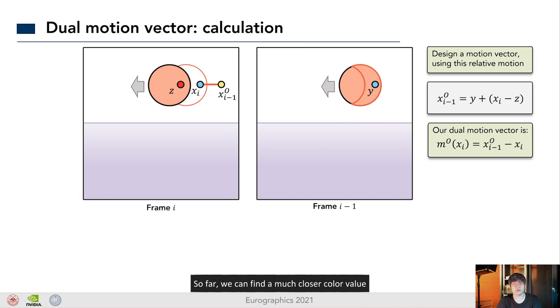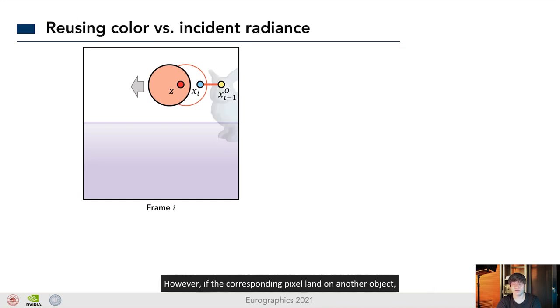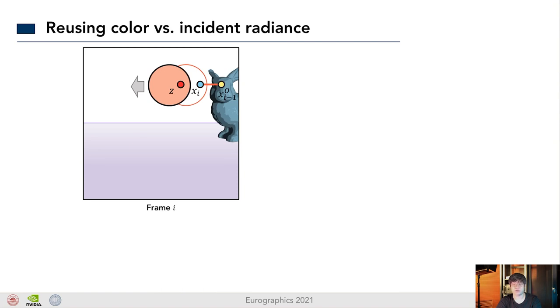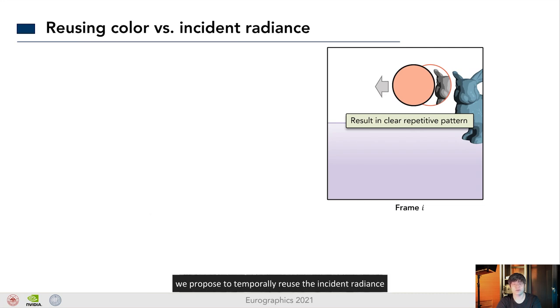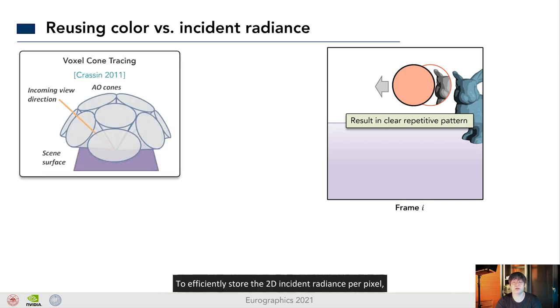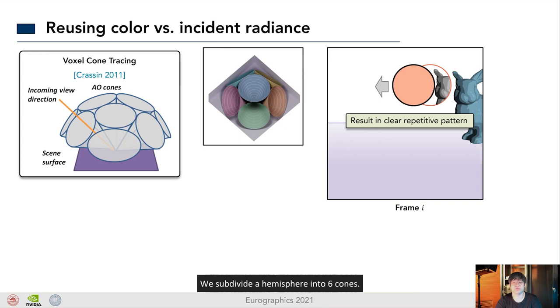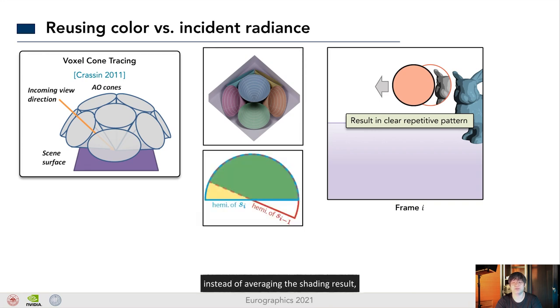So far, we can find a much closer color value to x sub i on the background. However, if the corresponding pixels land on another object, simply applying the color values will result in clearly repetitive patterns, because it is essentially copying pasting image contents. To address this issue, we propose to temporarily reuse the incident radiance instead of the shading results. Specifically, for the application of diffuse indirect illumination, we record the 2D incident radiance per pixel. To efficiently store the 2D incident radiance per pixel, we refer to the representation in voxel cone tracing approach. We subdivide a hemisphere into 6 cones, and during the spatial temporal filtering, instead of averaging the shading result, we filter for each cone individually, using the overlapping solid angles between each pair of cones as a filtering weight.